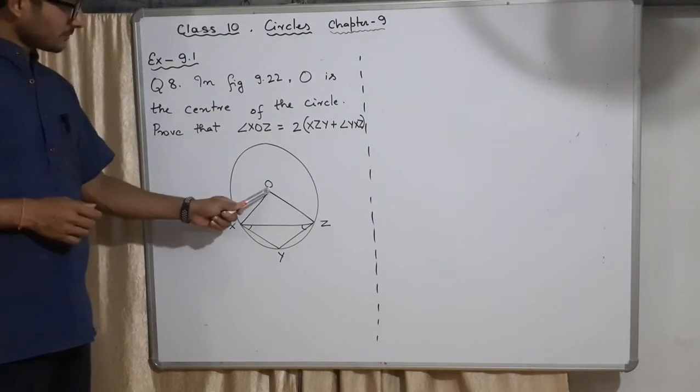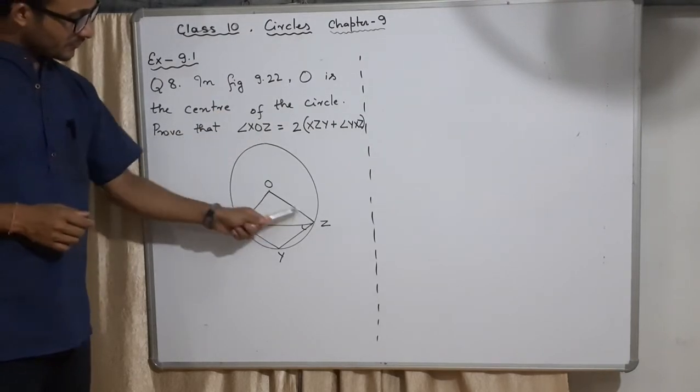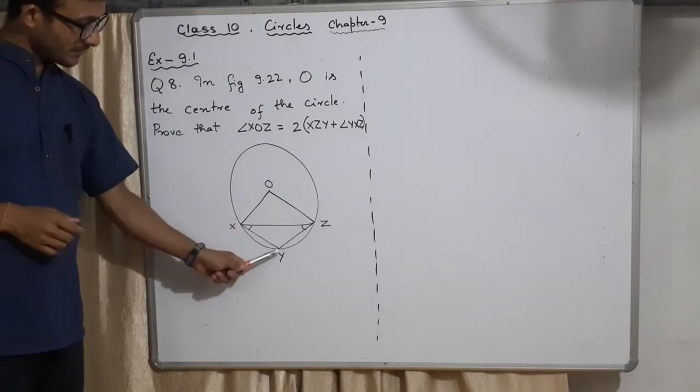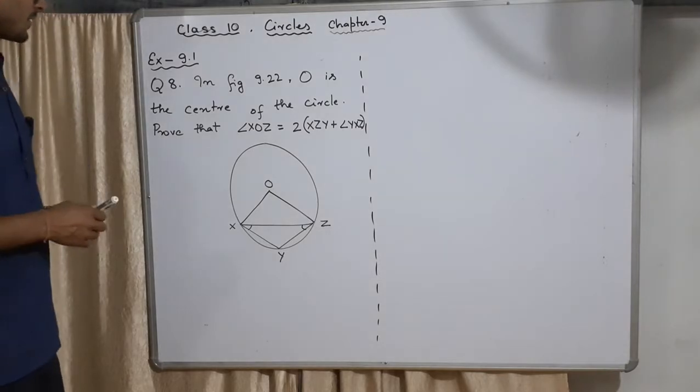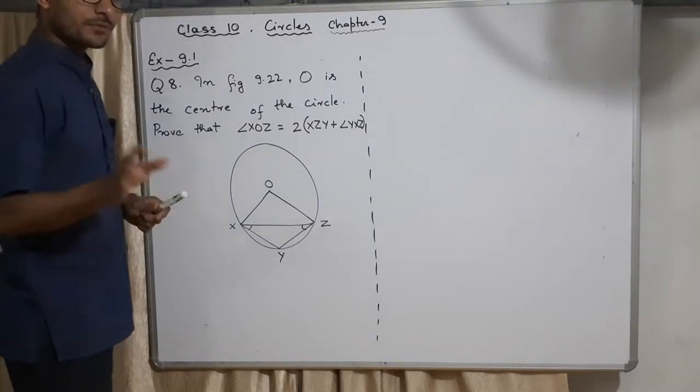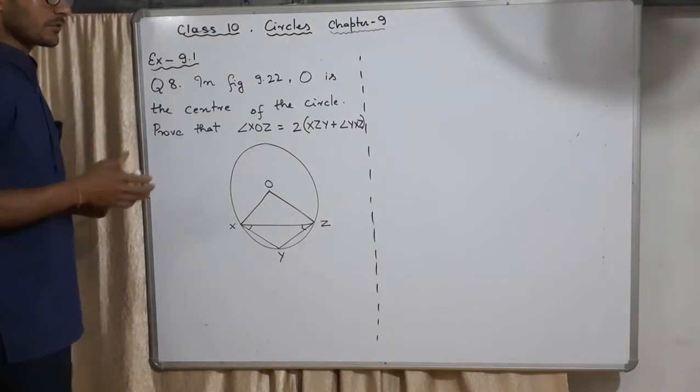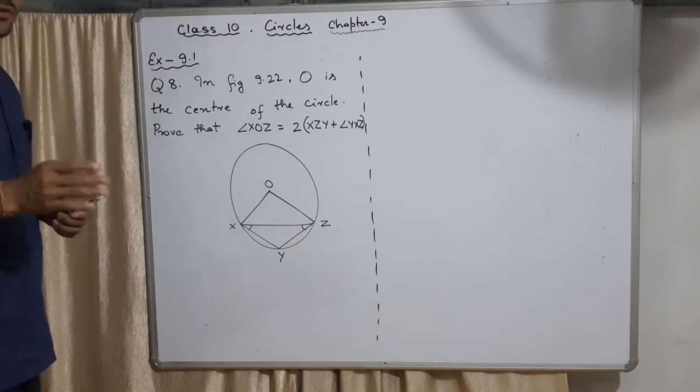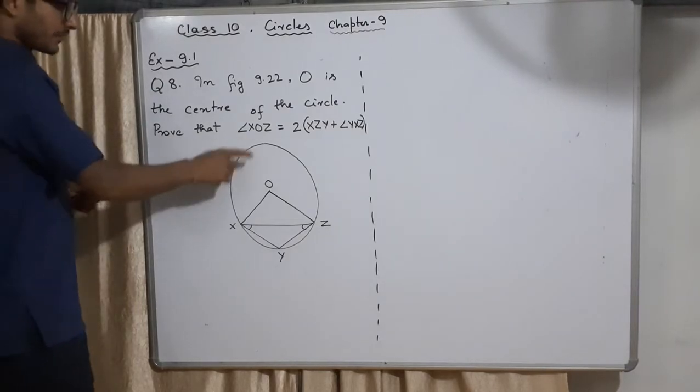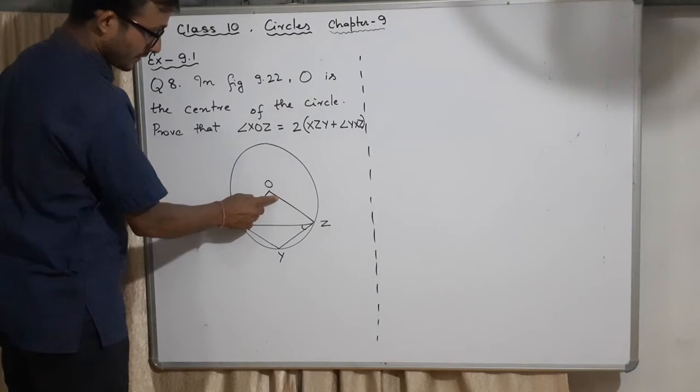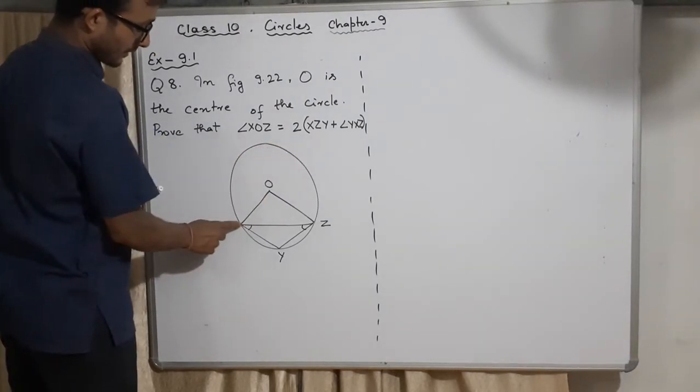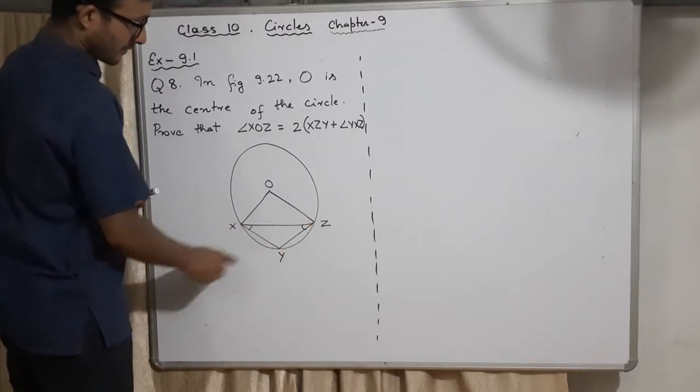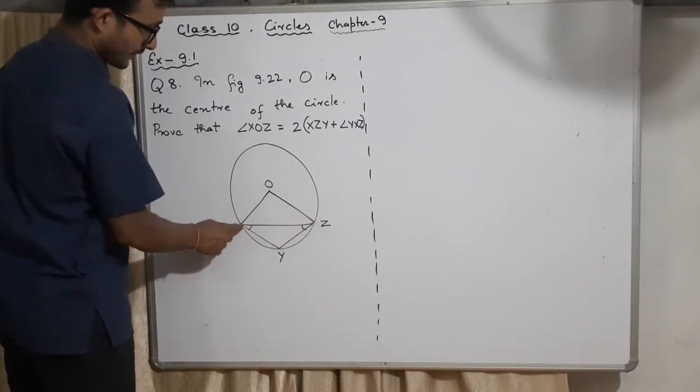This is the shape of the diagram there. Now there is another line XY and ZY. Here you have to prove that ∠XOZ - remember we are going to use those theorems which we already have done in 9.1, 2, 3 like that.